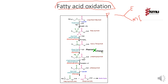Fatty acid oxidation starts with a long chain of fatty acids — also called polymers of fatty acid or polymers of triglycerides. The long chain of fatty acid reacts with coenzyme A. In this reaction, ATP is used and converted to AMP, and as a result, fatty acyl-CoA is produced. The enzyme required in this step is thiokinase, with magnesium as a catalyst.